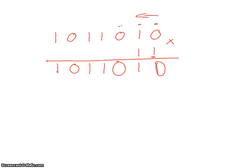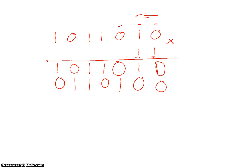Once we've moved across, we move on to the second one — don't forget to put the zero down first. One times zero is zero, one times one is one, one times zero is zero, one times one is one, one times one is one, one times zero is zero, and finally one times one is one.